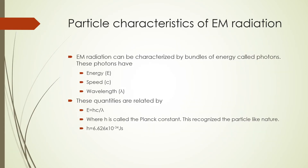Now let's look at the particle-like characteristics of electromagnetic radiation. In the higher energy portion, the electromagnetic spectrum is characterized by discrete particle-like bundles of energy called photons. These photons have energy E, speed c, and wavelength lambda. These quantities are related by the formula E equals hc over lambda, where h is called the Planck constant — a very small quantity which recognizes the particle-like nature of electromagnetic radiation.